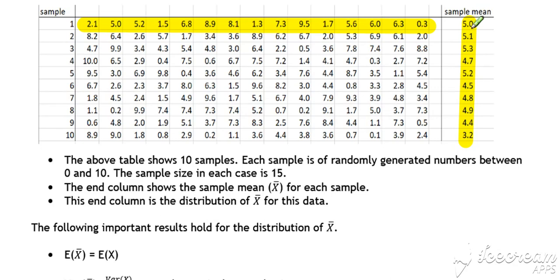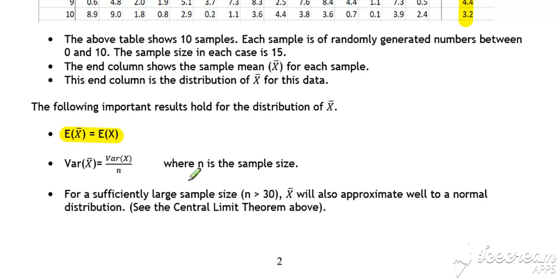First of all, if we worked out the expected value of these, then the expected value of X bar is the same as the expected value of X. Secondly, if we consider the variance, and we mentioned this above in video one, then the variance of X bar is equal to the variance of X divided by N.